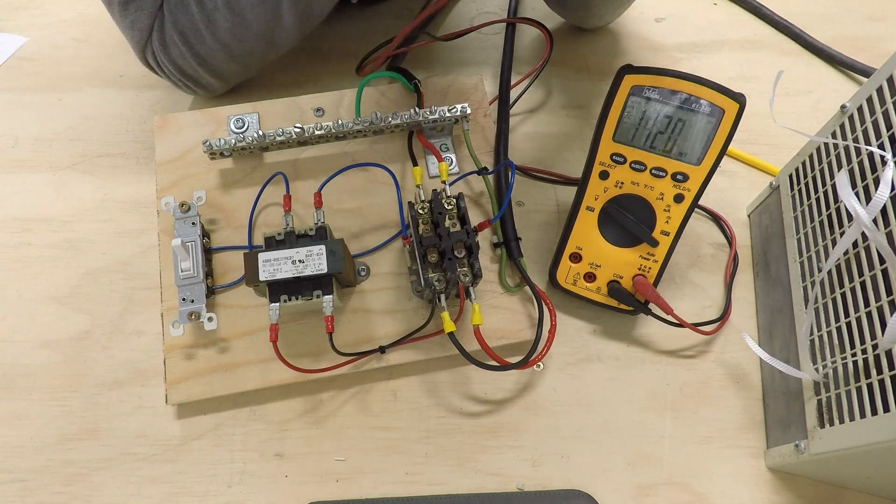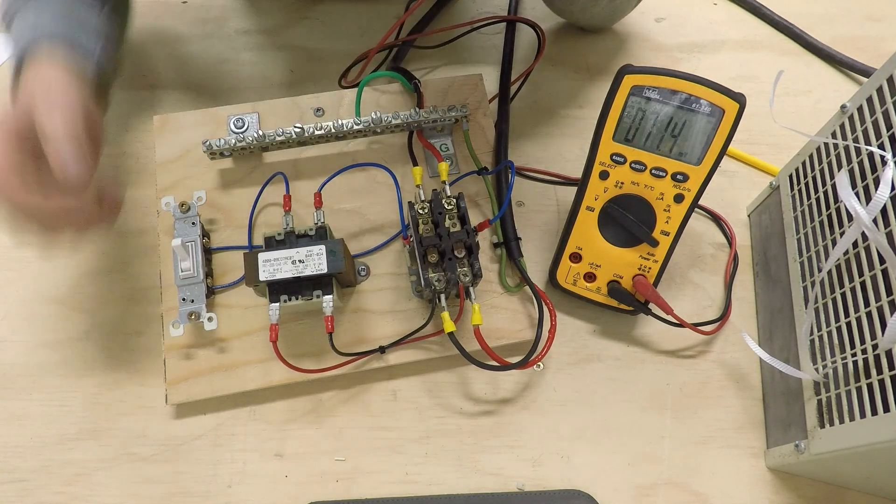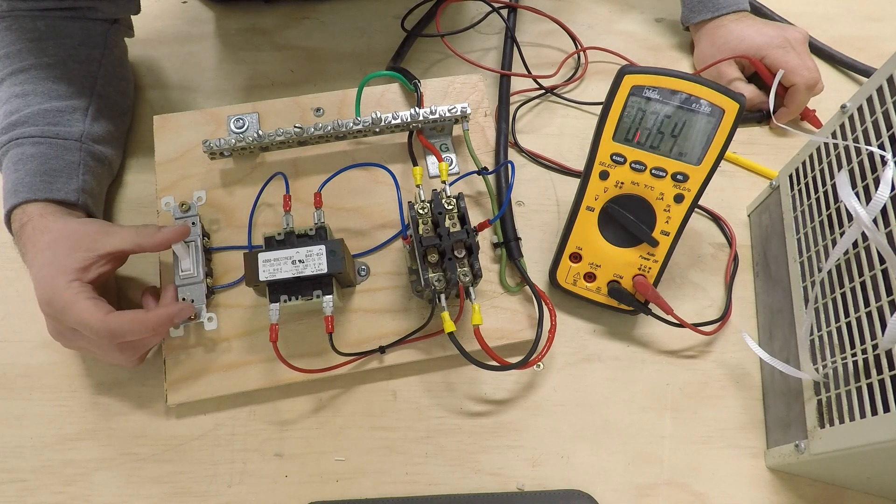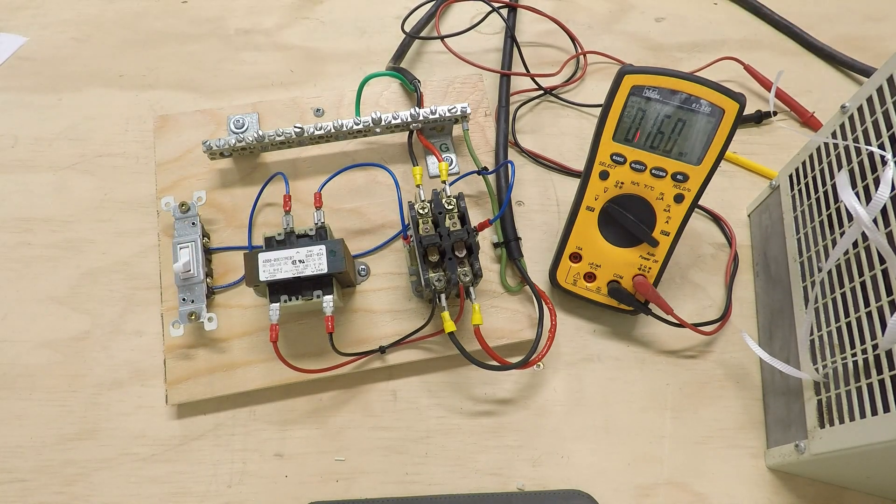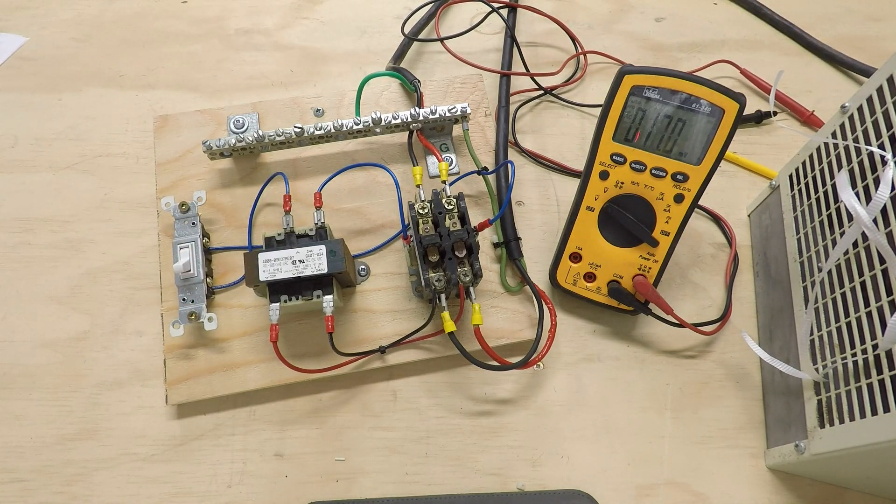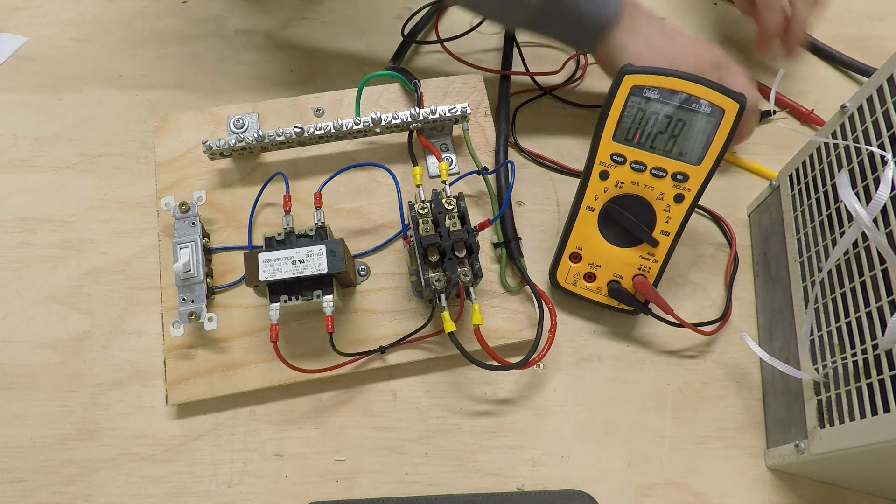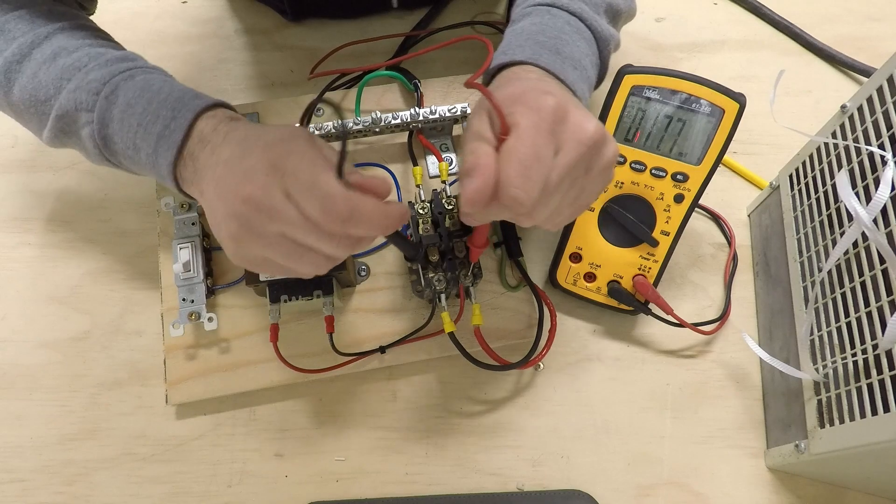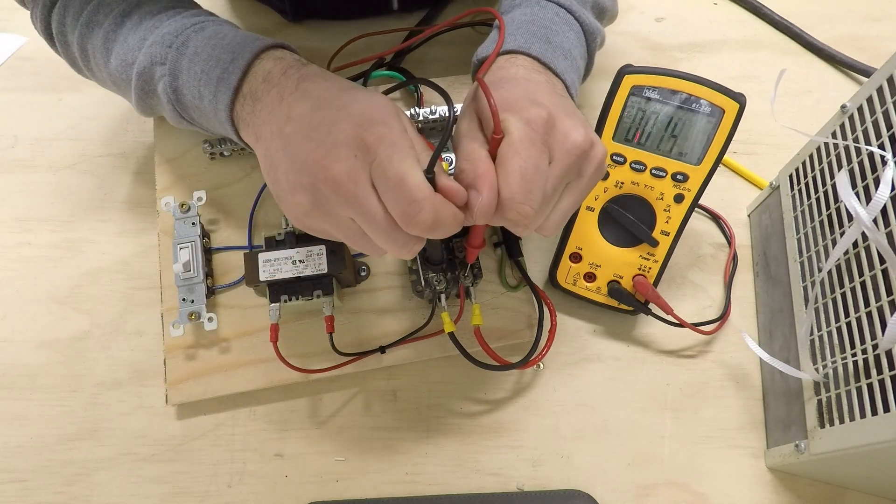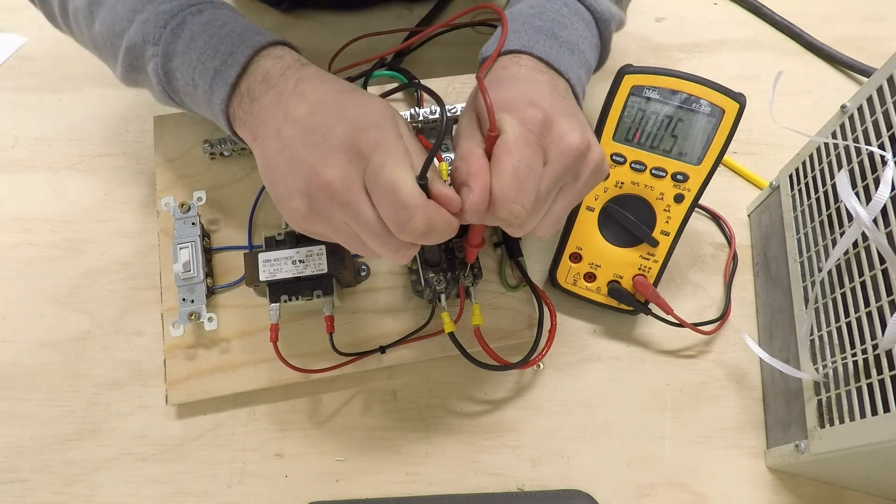So I'm going to show you how you can quickly fix that issue. So first thing you've got to do is turn off your contactor, and I'm also going to turn off the breaker. Okay, the breaker's off. I'm just going to confirm it because it's always better to be safe than sorry. And you've got zero volts on that. So perfect.